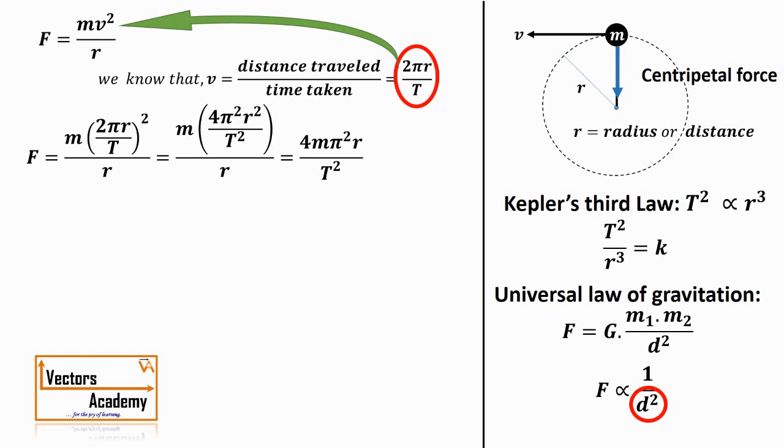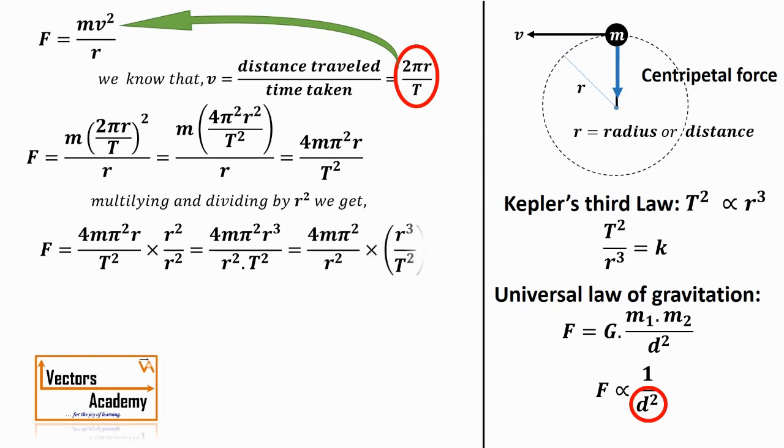To make it r³, we need to multiply it by r². So multiplying and dividing this formula by r², we get F = 4mπ²r³/(r²T²). Now if you take r³ and T² aside, we can substitute this value as 1/k using Kepler's third law. So the equation becomes F = 4mπ²/(r²k).